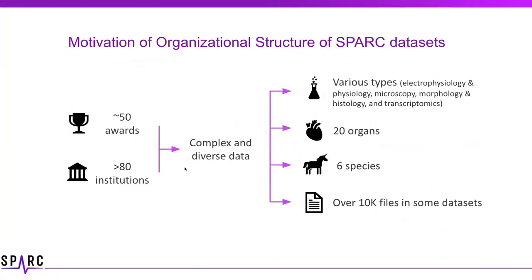Once you get into SPARC, you understand it is a very complex and diverse ecosystem. We have about 50 awards, investigators from over 80 institutions. There are various types of data — physiology, microscopy, transcriptomics — and lots of flavors of those. There are 20 organs and all associated nervous connective tissue, six species, and some datasets have over 10,000 files each.